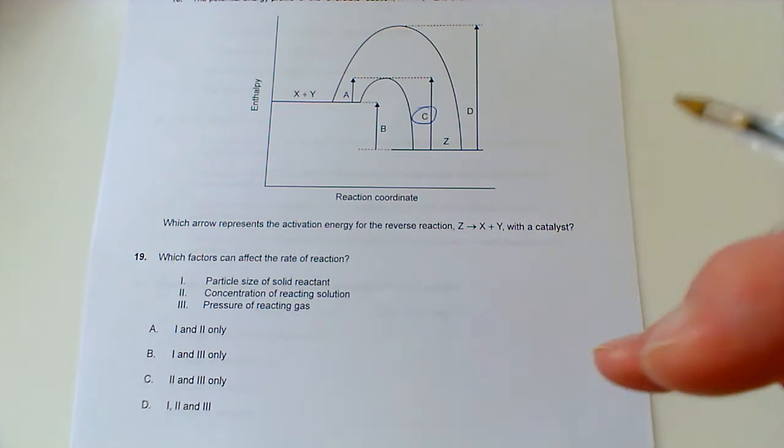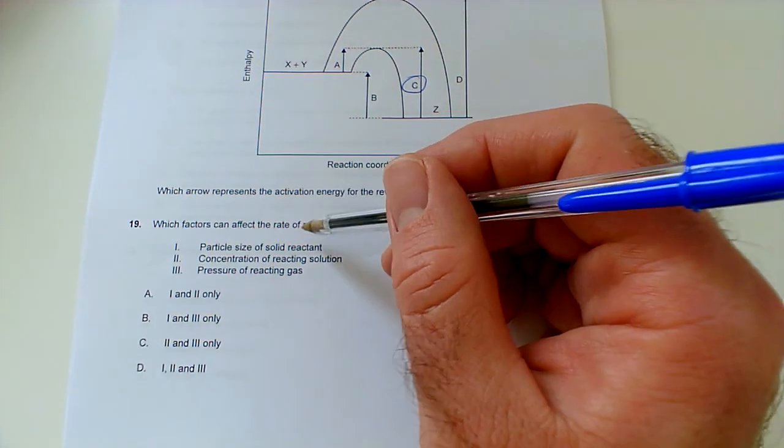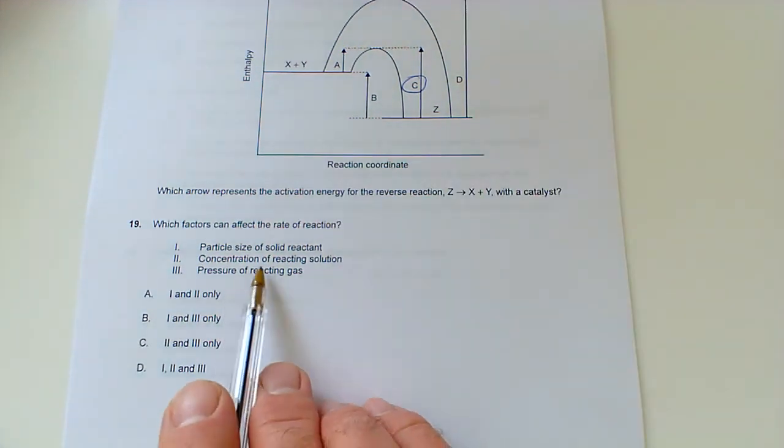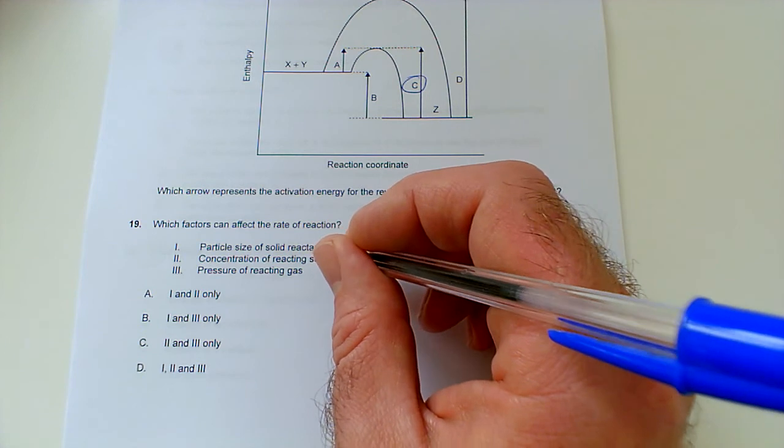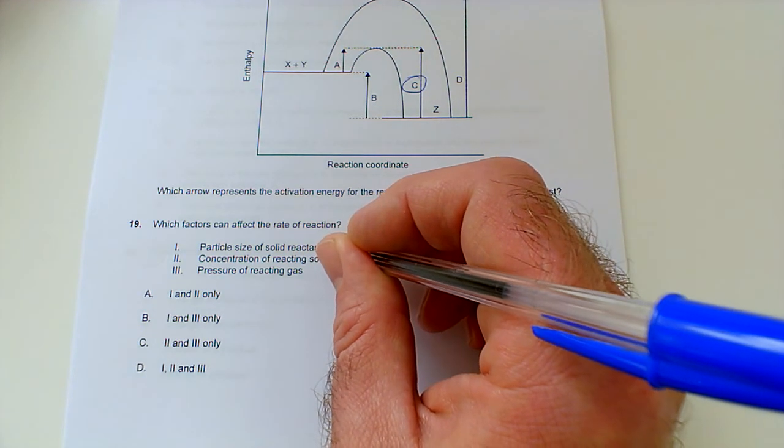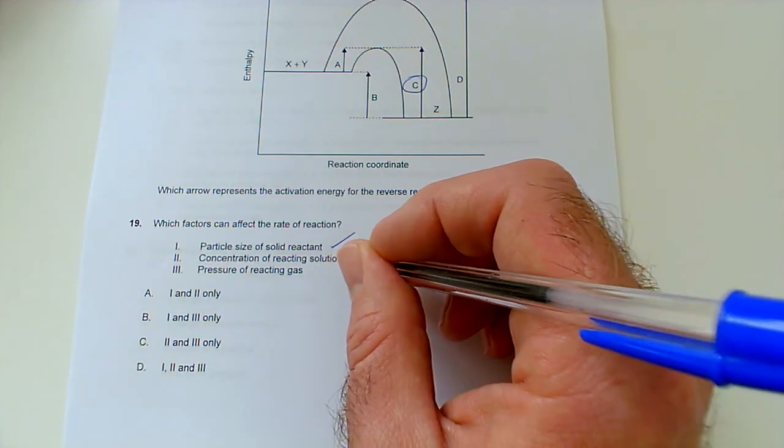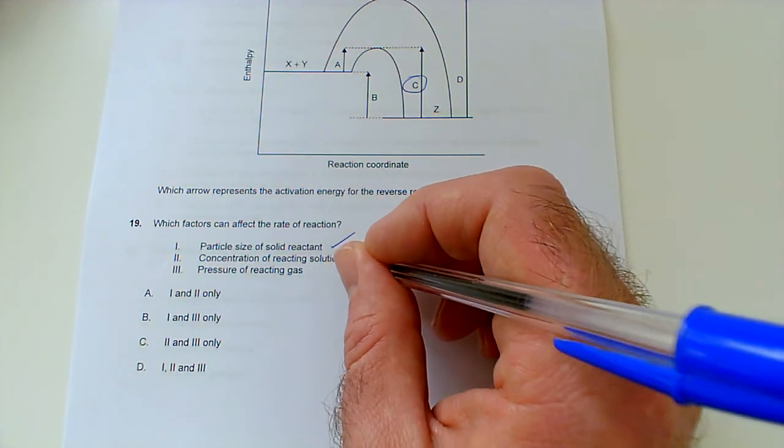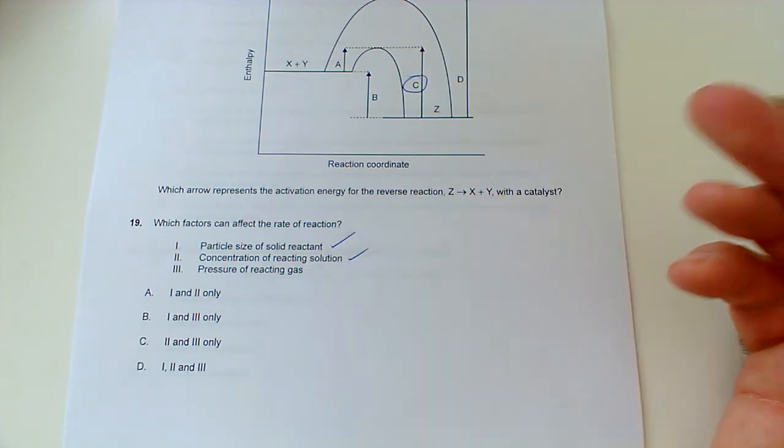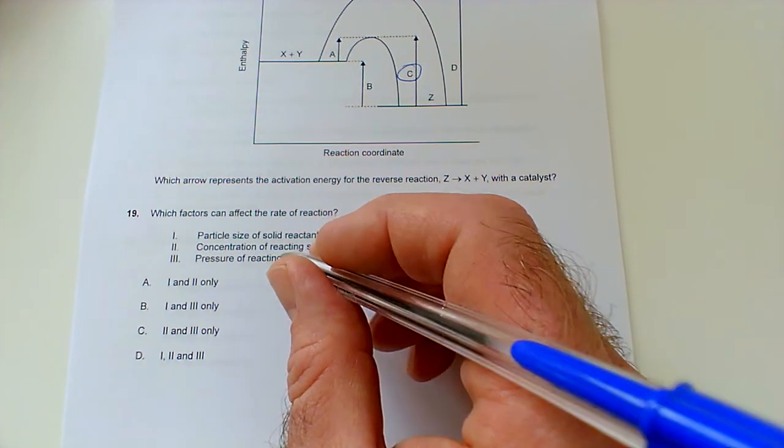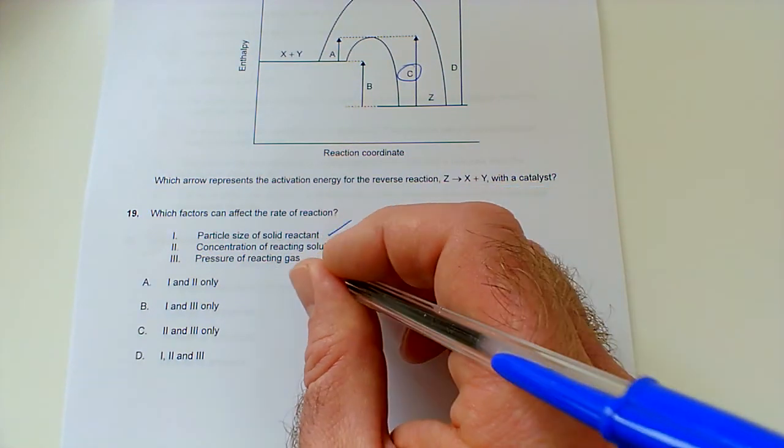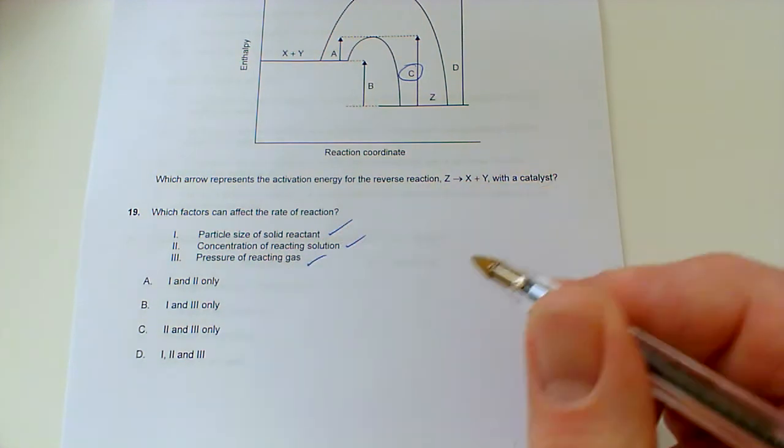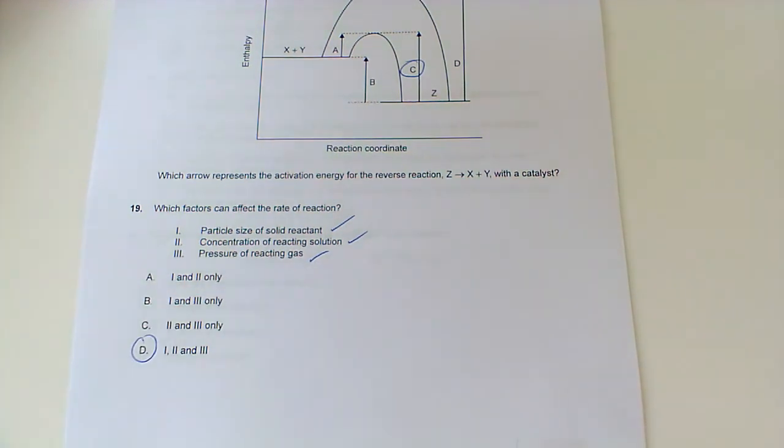Question 19: which factors can affect the rate of reaction? Particle size - yeah, bigger surface area means a faster rate of reaction. Concentration - yes, a higher concentration means a faster rate because again, as before, higher frequency of collisions. And pressure - yes, a greater pressure, greater frequency of collisions, faster rate of reaction. So all three of those will affect the rate of reaction.